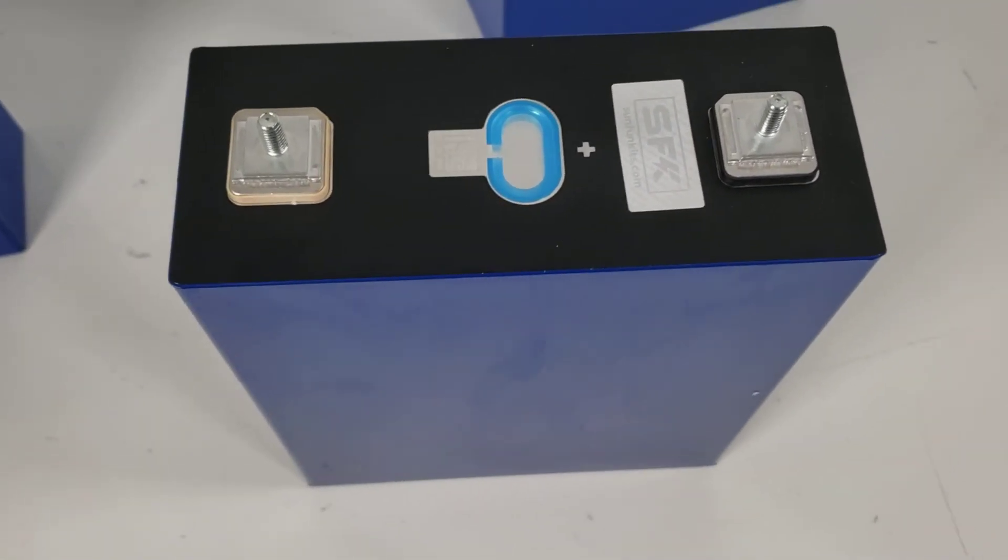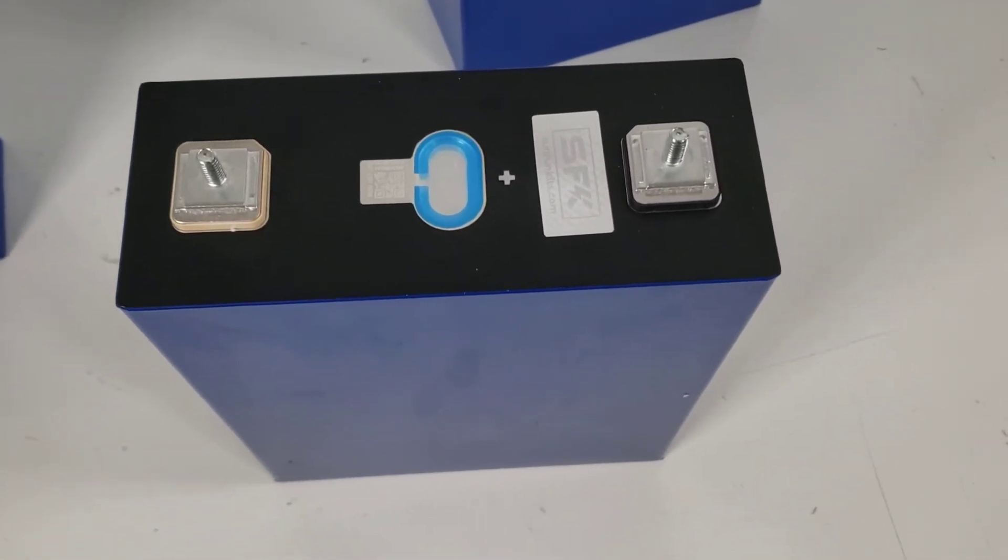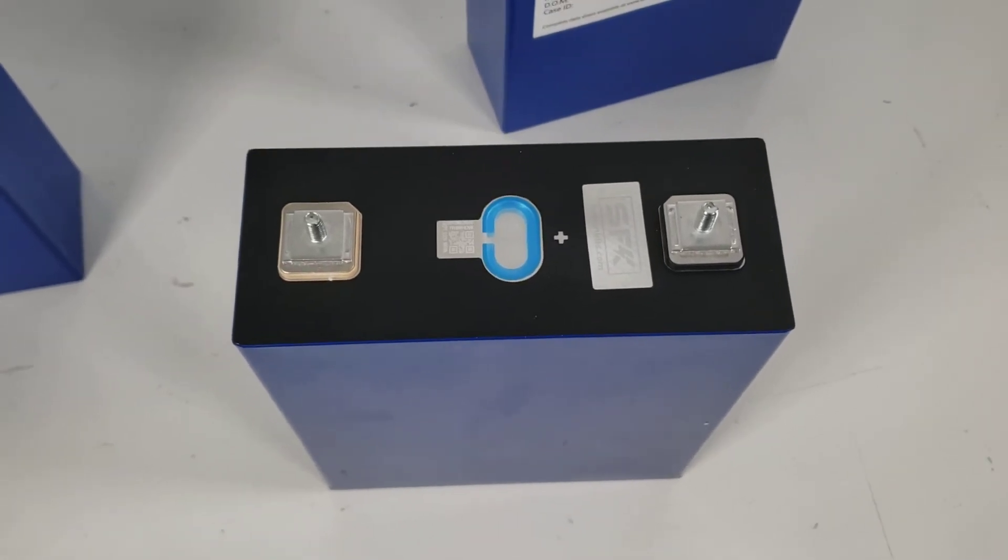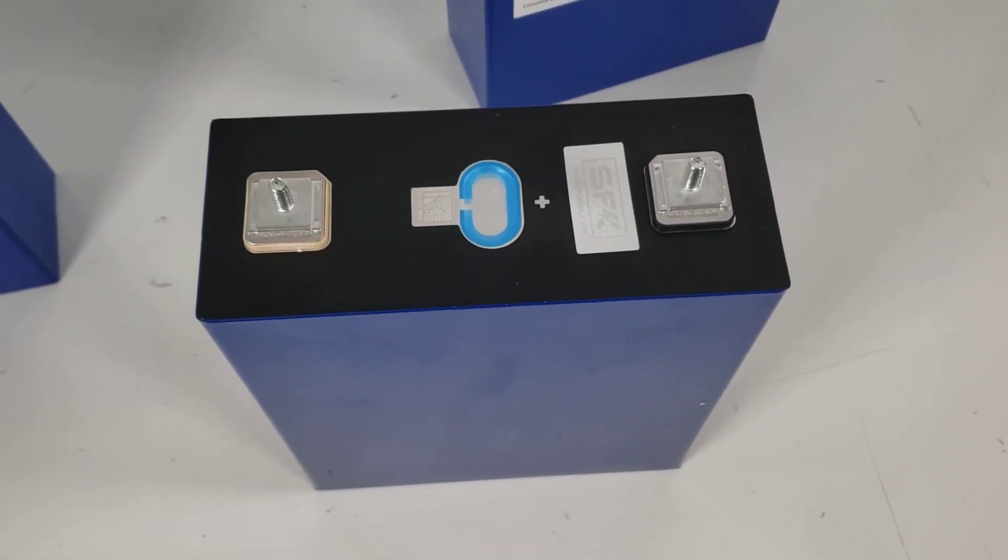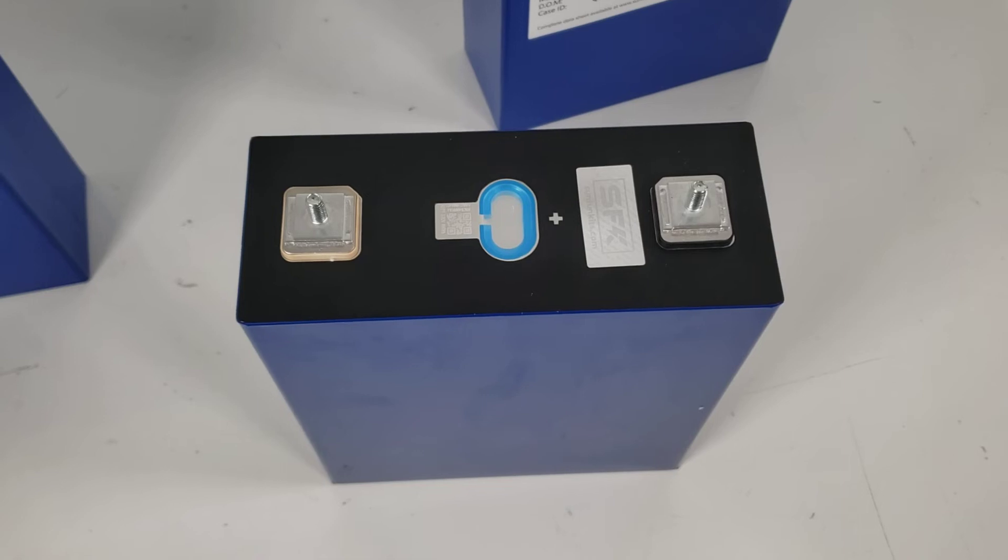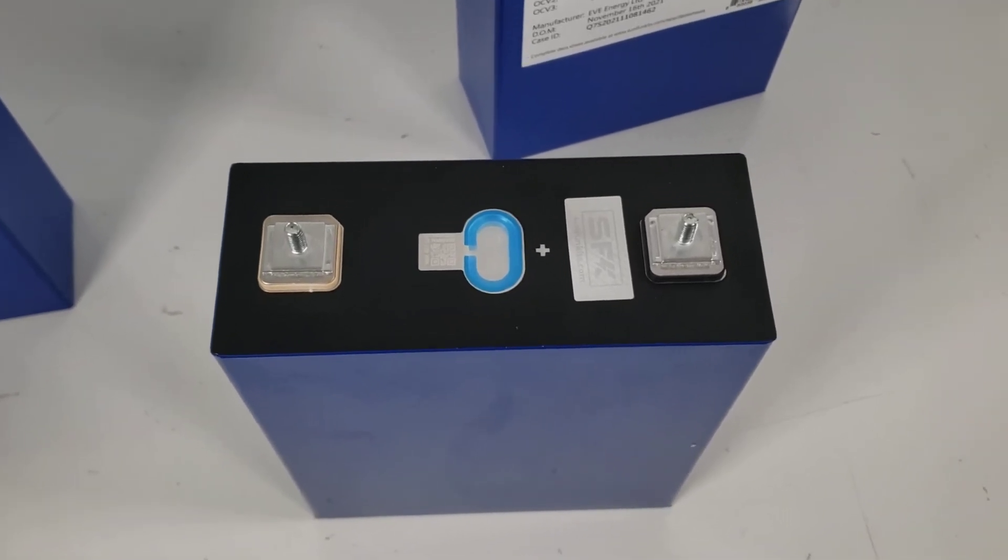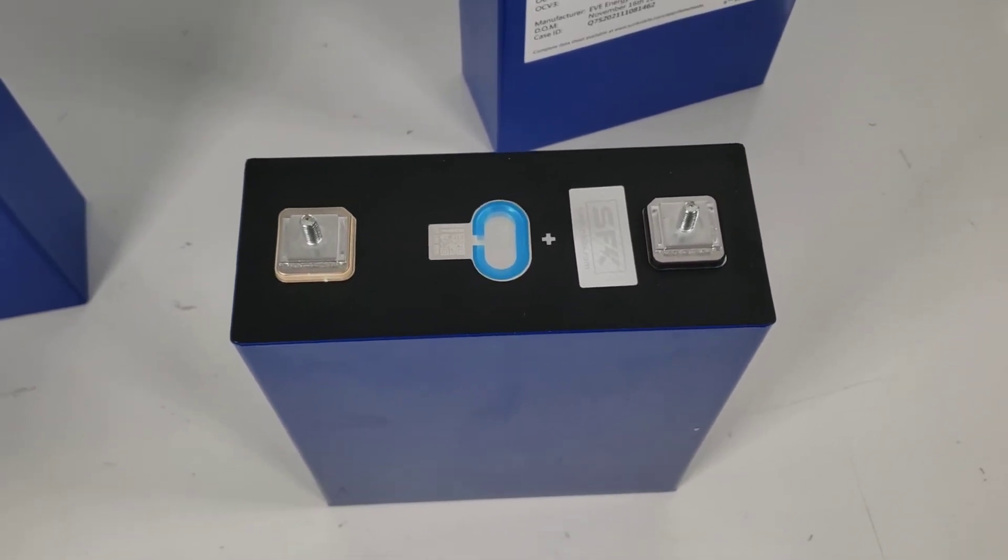The QR code is going to be there. We will have a label very similar to the EVE LF 304 labels on here. That should be coming soon. Again, it will be available from our international warehouse directly. So, look for the link in about a week or two after we post some results.